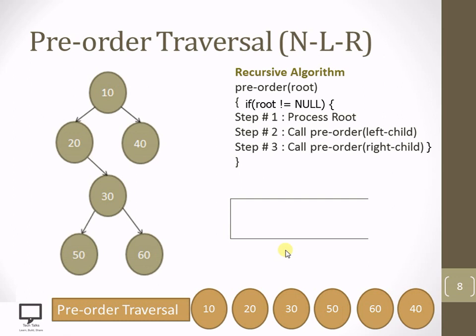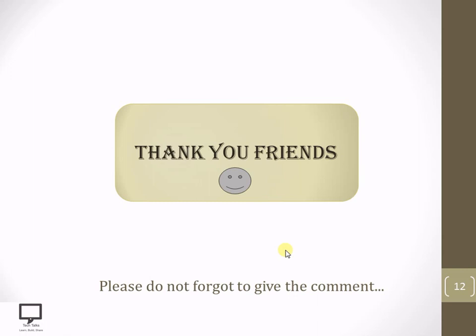In this way, you can execute pre-order traversal following the sequence: root node, left child, and right child. Thank you friends. I hope you are understanding the concept of pre-order traversal and mainly the recursive algorithm in this video session. If you like the content and the video, please like the video, give a comment, and share it with your friends. I am providing a subscription link and a shortcut link for the next video in this series, as well as a playlist for the whole series. Thank you, stay tuned with Tech Talks.